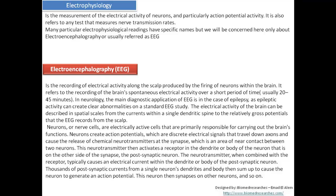Neurons, or nerve cells, are electrically active cells primarily responsible for carrying out the brain's functions. They create action potentials — discrete electrical signals that travel down the axon and cause the release of chemical neurotransmitters at the synapse, which is the area of near contact between two neurons. The neurotransmitter activates a receptor in the dendrite or body of the post-synaptic neuron. Thousands of post-synaptic currents then sum up to cause the neuron to generate an action potential, and this neuron then synapses onto other neurons, and so on.